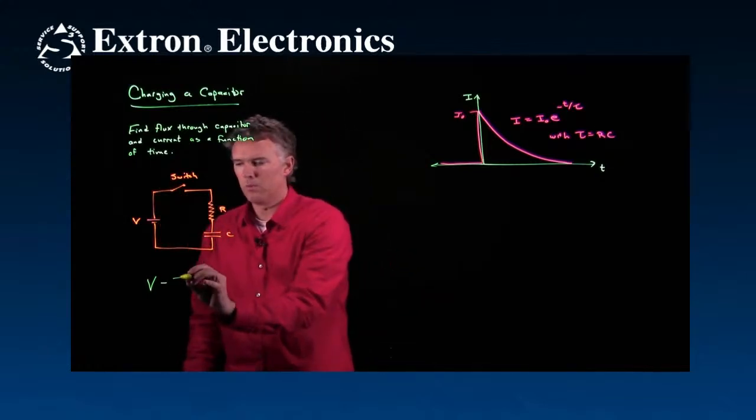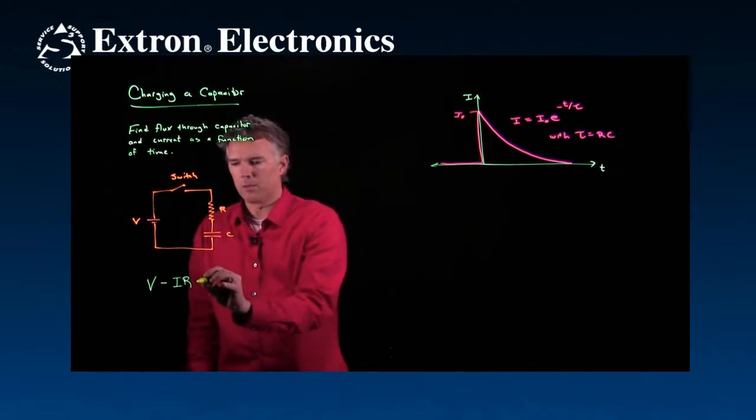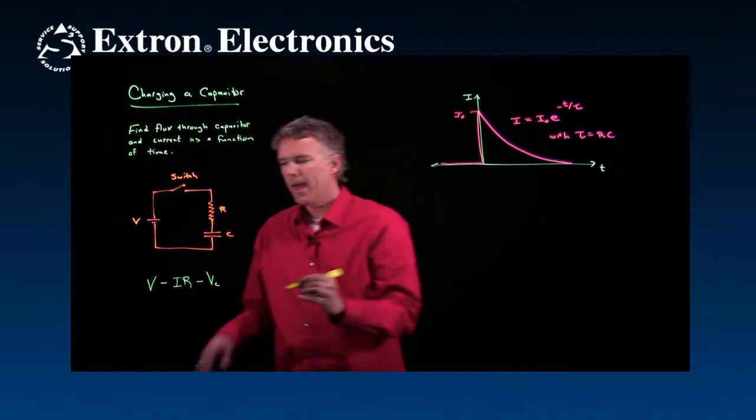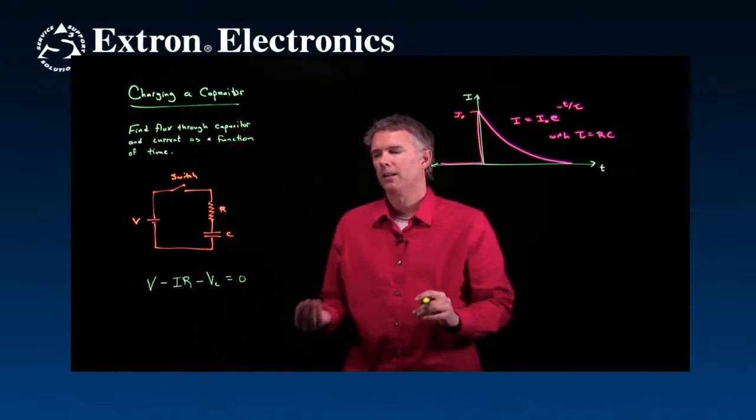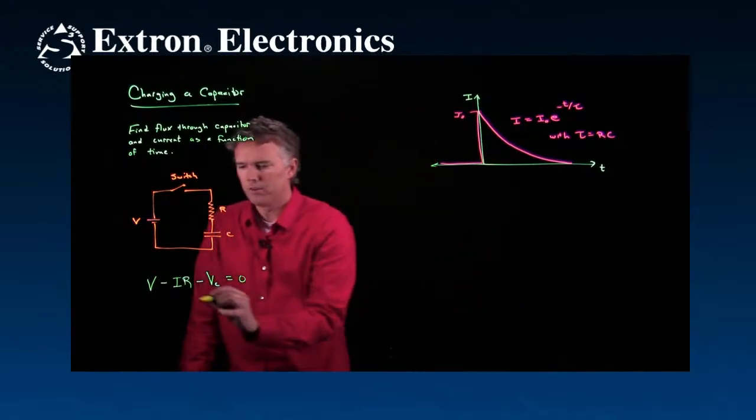When I go through the resistor, I have a drop of IR. When I go through the capacitor, I have a drop of VC. And then I'm back to zero, back to exactly where I started. So let's just take this equation now and solve it for VC.